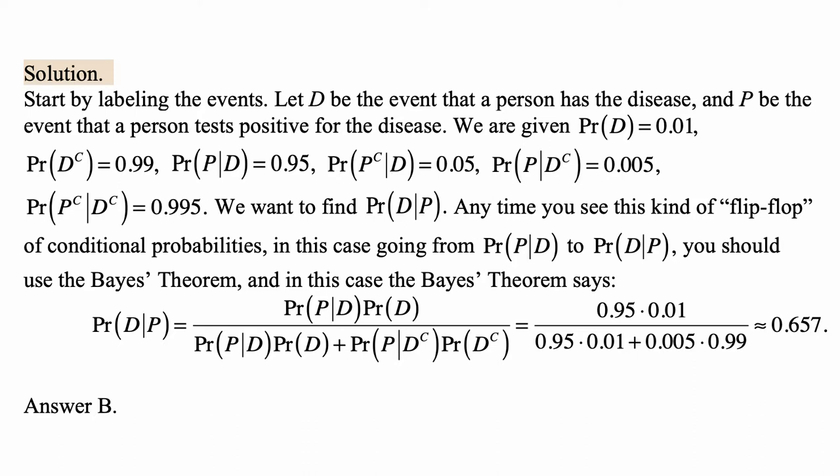Every single piece of this formula is given, so we just plug them in. That becomes 0.95 times 0.01 over 0.95 times 0.01 plus 0.005 times 0.99, and we calculate it to get 0.657, which is answer B.